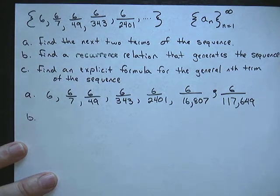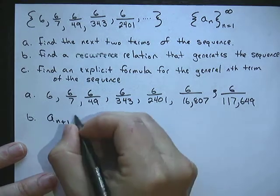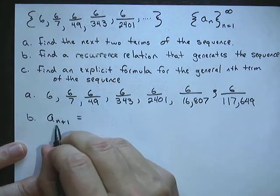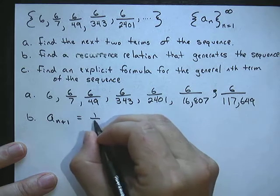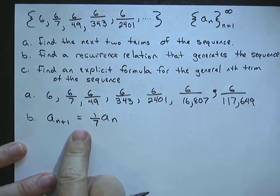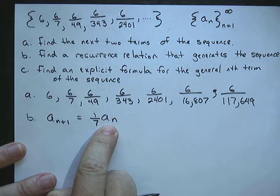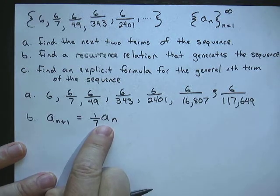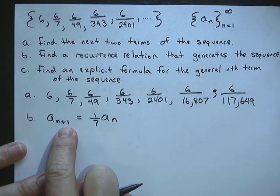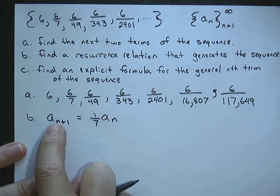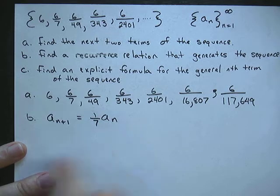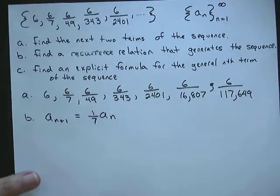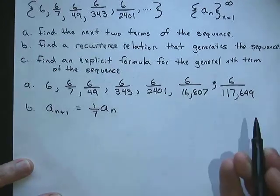We have a of n plus 1 is equal to the previous term. a sub n plus 1 would be just a sub n, and we're going to multiply that by 1 seventh. So what this says is if you take the previous term, because this is one more, take the previous term and multiply it by a seventh, you get the next term. So if we wanted the next one, a sub n plus 2 would be equal to 1 seventh times a sub n plus 1, and so on and so forth. So that is the recurrence relationship, and it's what we use to figure out these last two terms.